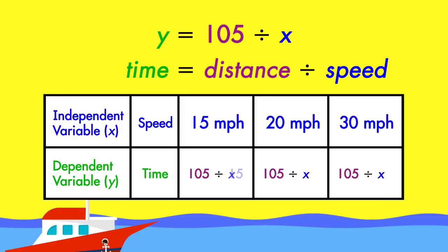Plugging in the three speeds, we see that it could take the boat 7, 5 and a quarter, or 3 and a half hours to travel the distance. Notice that whenever you change the independent variable X, the dependent variable Y is affected.